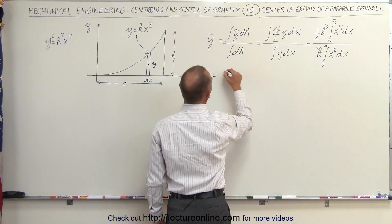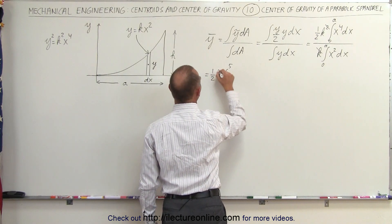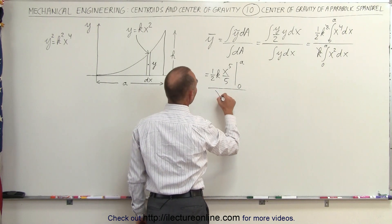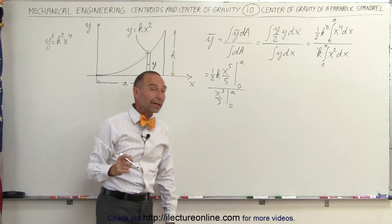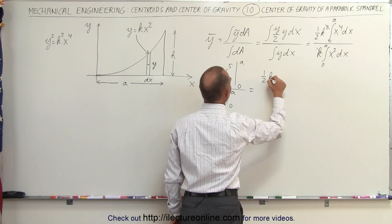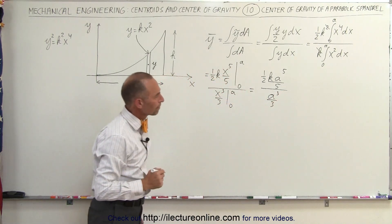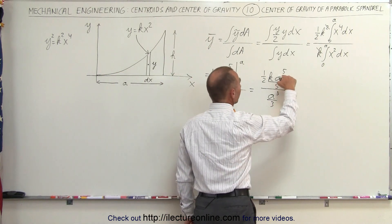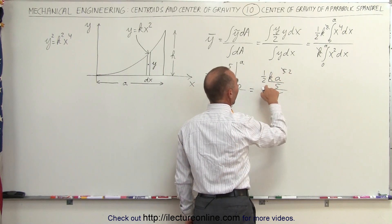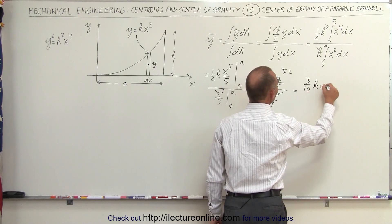Now we'll integrate. This is equal to one-half k times x to the fifth over 5, evaluated from 0 to A, divided by x cubed over 3, evaluated from 0 to A. When we plug in 0 for the limit we get 0, so we only have to plug in A. This gives us one-half k times A to the fifth over 5, divided by A cubed over 3. Simplifying algebraically: A to the fifth over A cubed gives A squared; one-half times one-fifth is one-tenth; dividing by one-third brings a 3 to the numerator, so this becomes 3/10 · k · A².